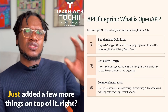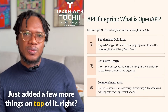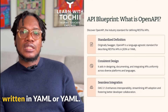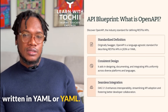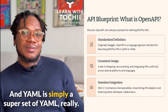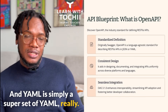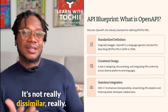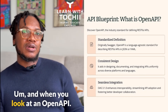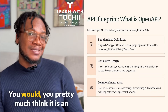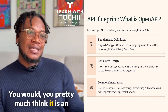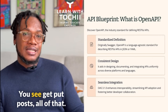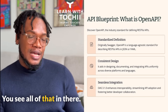What we have simply done is added a few more things on top of REST. It can be written in YAML or JSON — most times you see it written in YAML, and YAML is simply a superset of JSON. When you look at an OpenAPI spec, you pretty much think it is a REST API, and that's because it is — it's using resource-oriented design, you see GET, PUT, POST, all of that.